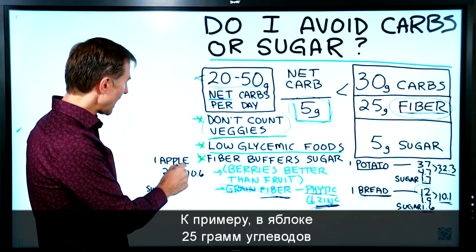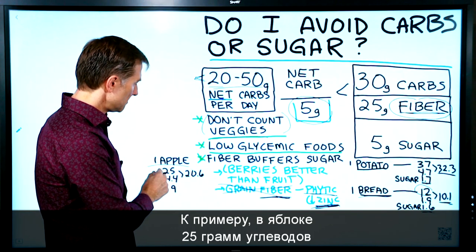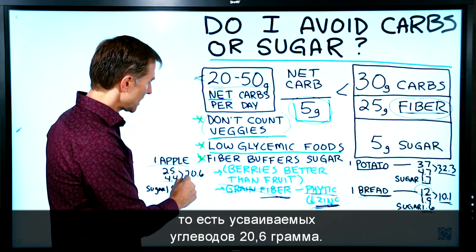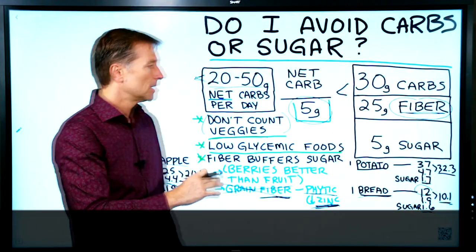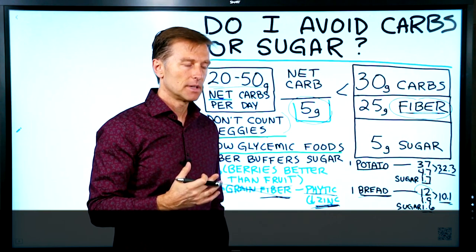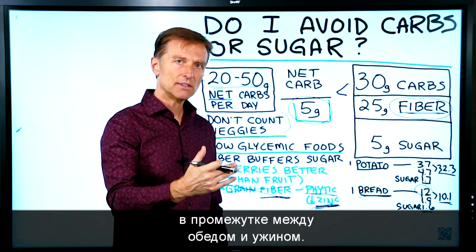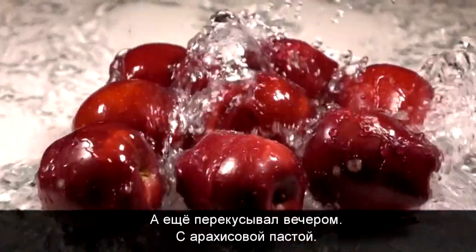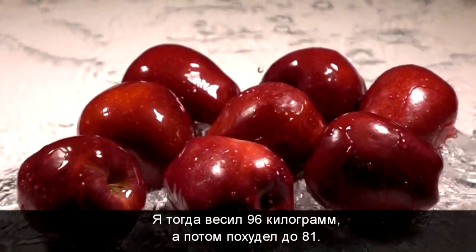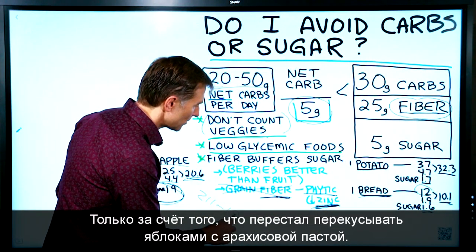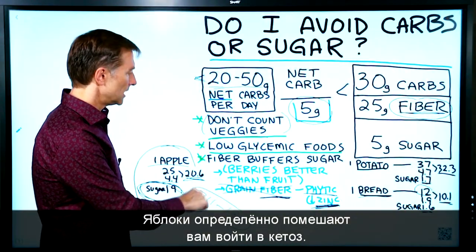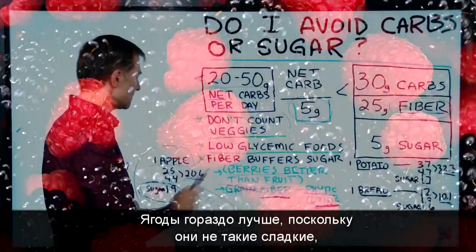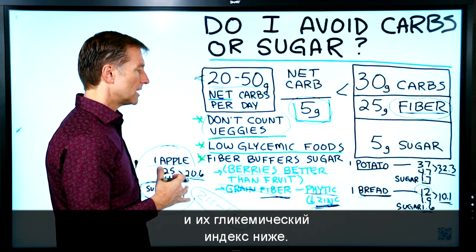What about fruit? An apple has 25 grams of carbs, 4.4 grams of fiber, giving a net carb of 20.6 — and look at the sugars: 19 grams of sugar. This is like eating a candy bar. Several years ago, I was consuming apples as a snack between lunch and dinner, and apples with peanut butter in the evening. I had a lot of apples and I was at 211 pounds — I'm now at 180. All I really did was cut out those apple and peanut butter snacks. So apples will definitely keep you from getting into ketosis. Berries are much better because they're less sweet, have higher fiber, and are lower on the glycemic index.